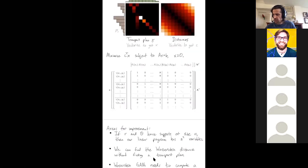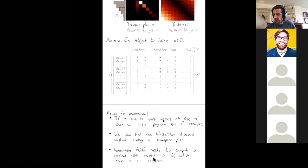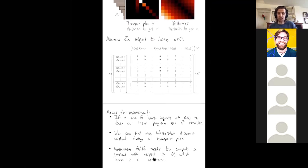Another area for improvement is that we'll actually be able to find the Wasserstein distance without finding a transport plan at all. So it's possible to not find this entire transport plan matrix, but still get out a real value Wasserstein distance.